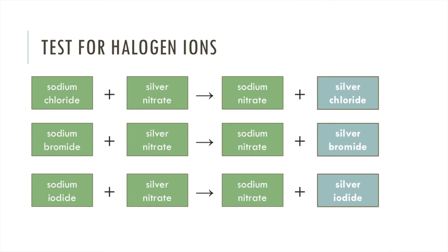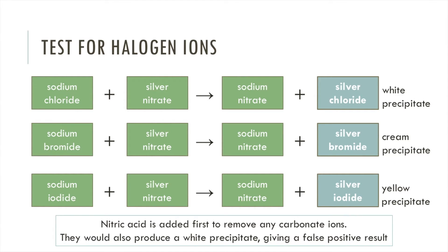Next is the test for halogen ions. Each of the halogens reacts with silver nitrate and this produces precipitates of differing colours. The silver chloride precipitate is white, the silver bromide precipitate is cream and the silver iodide precipitate is yellow. Before reacting with silver nitrate however we have to add nitric acid to remove the carbonate ions. This is because sodium carbonate and silver nitrate would produce silver carbonate, which is also a white precipitate giving a false positive result.